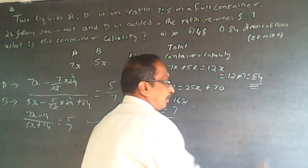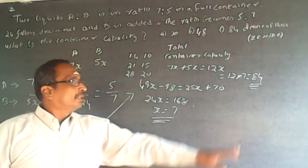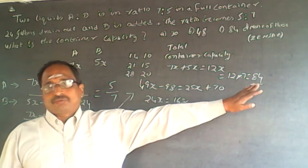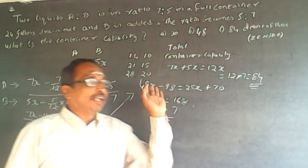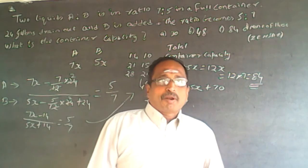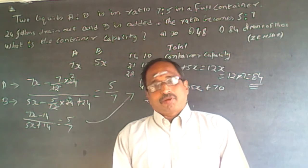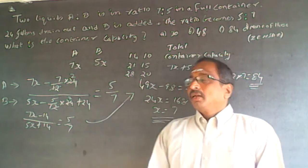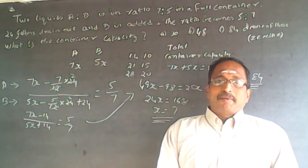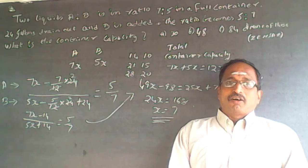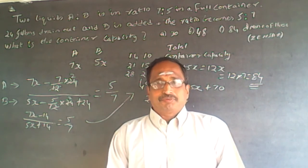There is only one answer for this problem: 84. Understand the question — it is a ratio and proportion problem, not a mixtures and allegations problem. Subscribe to the channel; questions will be added regularly. The answer for this is 84.